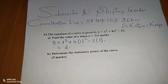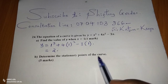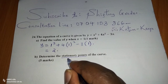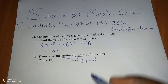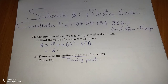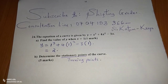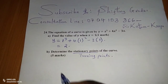Part (b) asks us to determine the stationary points of the curve. Stationary points are also called turning points — these are points where the curve changes gradient, either from positive through 0 to negative, from negative through 0 to positive, or through 0 while staying positive or negative.